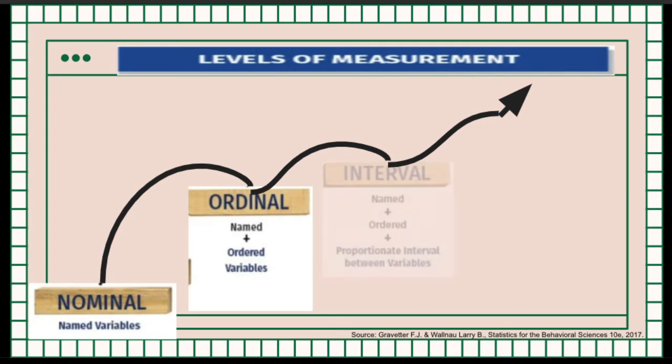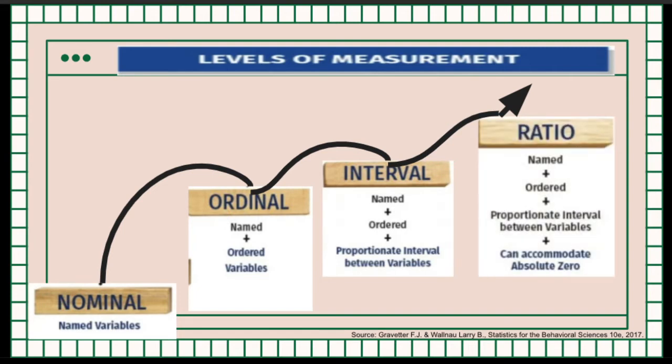For the interval, you have the name, and then the ordered, and then the proportionate interval between variables. It is ordered categories that are all intervals of exactly the same size. So we can have, for example, from rating 0 to 8, we have 8.2, 9.1, and 9.6. And in the ratio, it's an interval scale that has an additional feature of an absolute zero. We can have 15.20, 14.10, and 13.40.